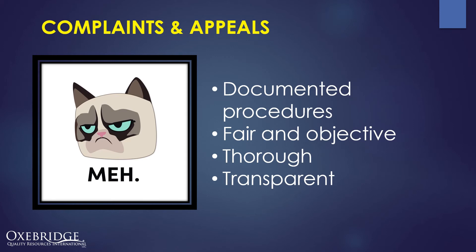The inspection body must have a formal procedure on how it will objectively and formally process complaints and appeals. A complaint can come from the body's client or any third party, even a member of the public. An appeal typically refers to either escalating a complaint, or a CMMC client appealing a finding from a CMMC appraisal. In all cases, these procedures must be made public to ensure the public has insight into how the body will process complaints and appeals.